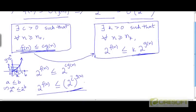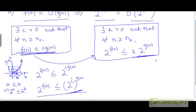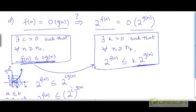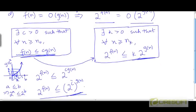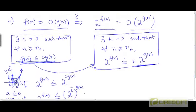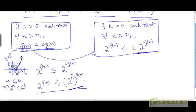One way to crystallize this intuition, or to verify that this is indeed the case, would be to try to come up with a counterexample to this implication, based on the intuition that the base of the exponential is what makes all the difference. Let's try to choose specific functions and values for c so that we can actually test this out.